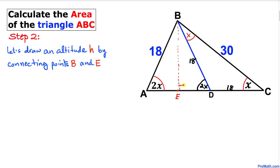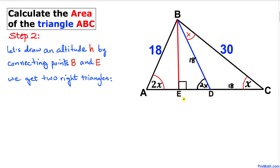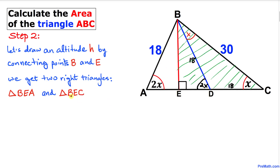Here's our nicer-looking diagram. As a result we get the shaded right triangle BEA and another right triangle BEC, and we will focus on these two right triangles one at a time.